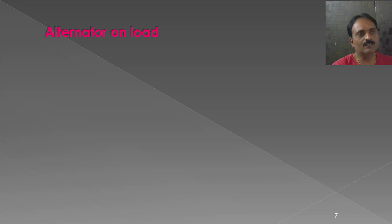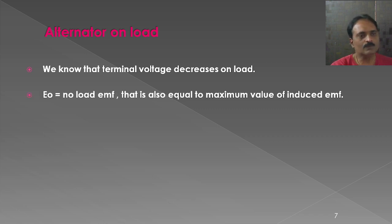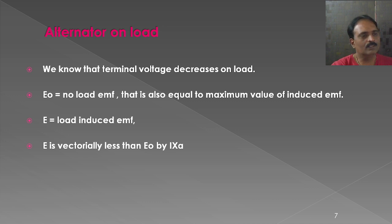Now let us see what happens when the alternator is loaded. Whenever any device is loaded, the voltage drops due to certain parameters like resistance and reactance. Here, E0 is the no-load EMF — the induced EMF in the armature when the alternator is not loaded, which is the maximum value. E is the on-load induced EMF when it is loaded, which is a little bit less due to the armature reaction effect. The on-load induced EMF is vectorially less than E0 by a value of I×XS.